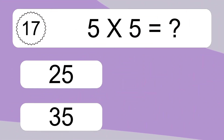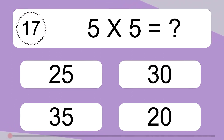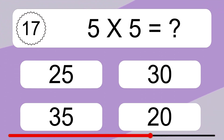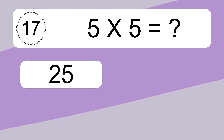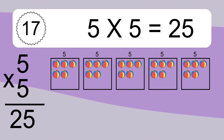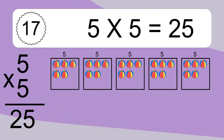5 times 5 equals what? 5 times 5 equals 25. We have 5 boxes, and each box has 5 colorful balls inside. If you count all the balls in all the boxes together, you will have 5 times 5 balls. This equals 25 balls.